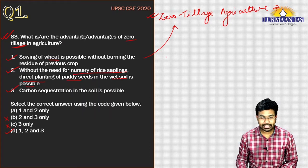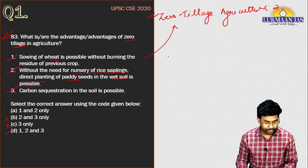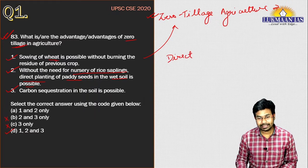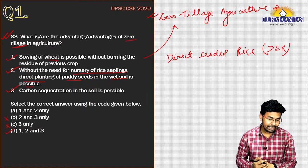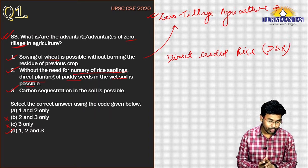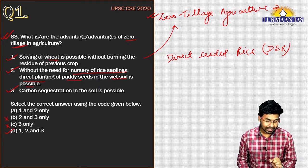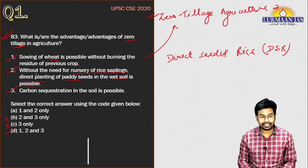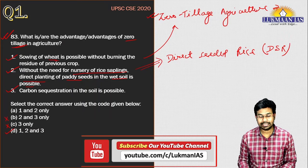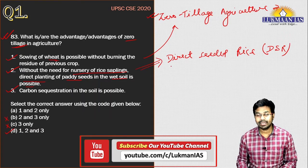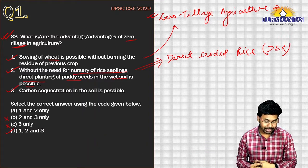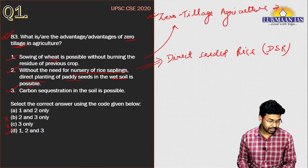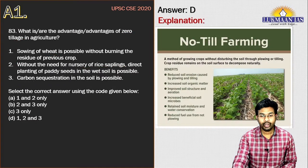Under zero tillage agriculture, we also use a technique known as Direct Seeded Rice, or DSR. DSR is a process of establishing a rice crop from seeds sown directly in the field rather than transplanting seedlings from a nursery. This relates to the second statement in the question. No-tilled or zero-tilled soil is also cooler compared to other soils, and it promotes conservation agriculture.